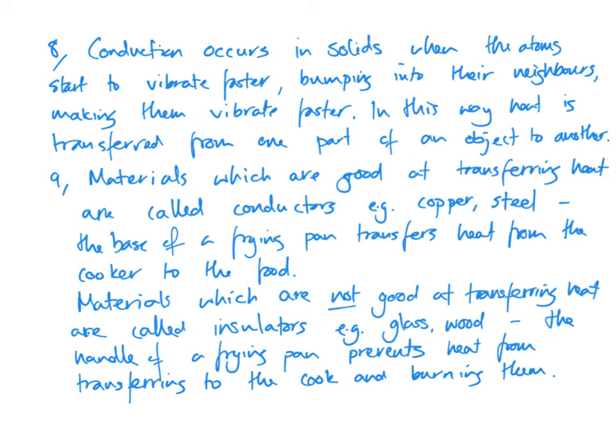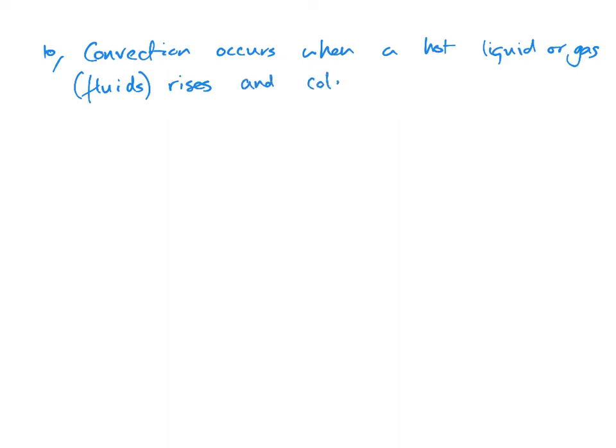So that's what we need to know about conductors. The next learning outcome is about convection. Convection occurs when a hot liquid or gas, which collectively are known as fluids - fluids we normally associate with liquids only, but gases are actually fluids because they can flow as well. And it occurs when a hot liquid or gas rises and cold liquid or gas falls.